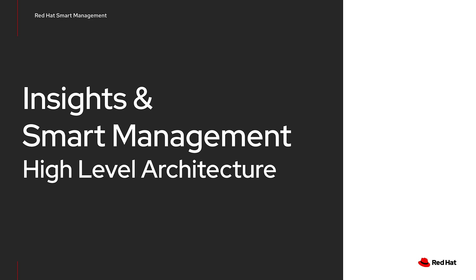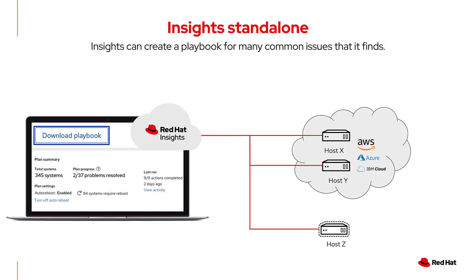Let's look at this from a high-level architectural perspective. It's important to first understand the behavior for Insights and RHEL without Smart Management. In this case, Insights can detect common issues and, for most issues, can dynamically generate an Ansible playbook. Without Smart Management, you can download that playbook. Once downloaded, you need to determine how you run the playbook — you can use Ansible Community, Ansible Automation Platform, or sync that playbook with Ansible Tower. The choice is yours.